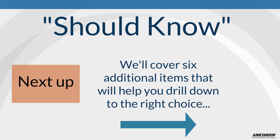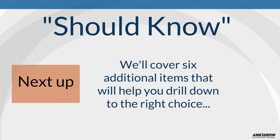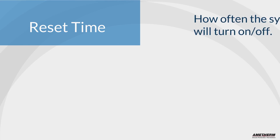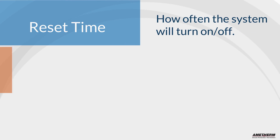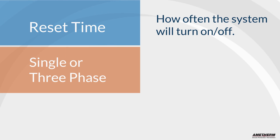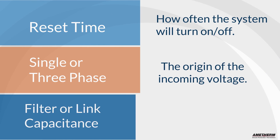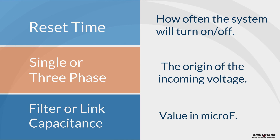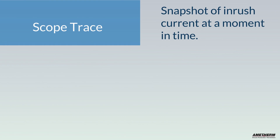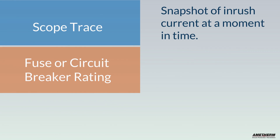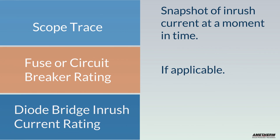Next, we'll cover six additional items that will help you drill down to the right choice: reset time — how often the system turns on or off in a specified time frame; single or three phase — the origin of the incoming voltage; filter or link capacitance value in microfarads — this quantifies the magnitude of the capacitance; scope trace — a snapshot of inrush current at a moment in time; fuse or circuit breaker rating if applicable; and diode bridge inrush current rating if applicable.